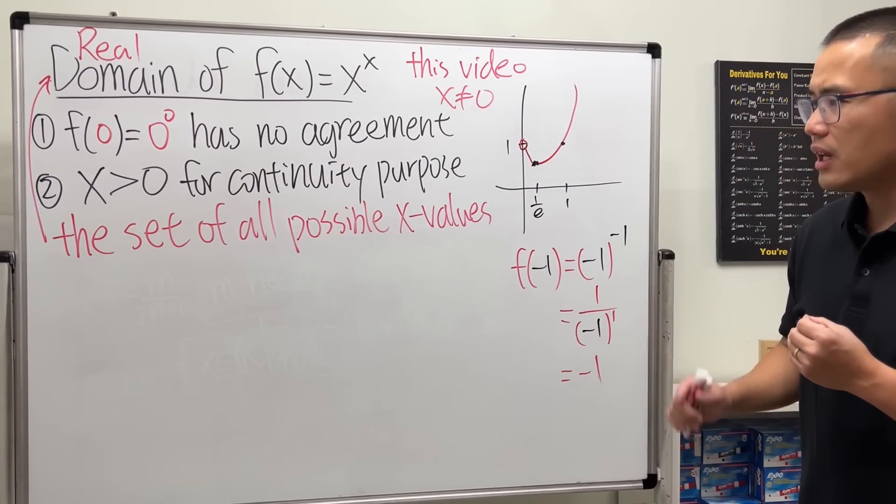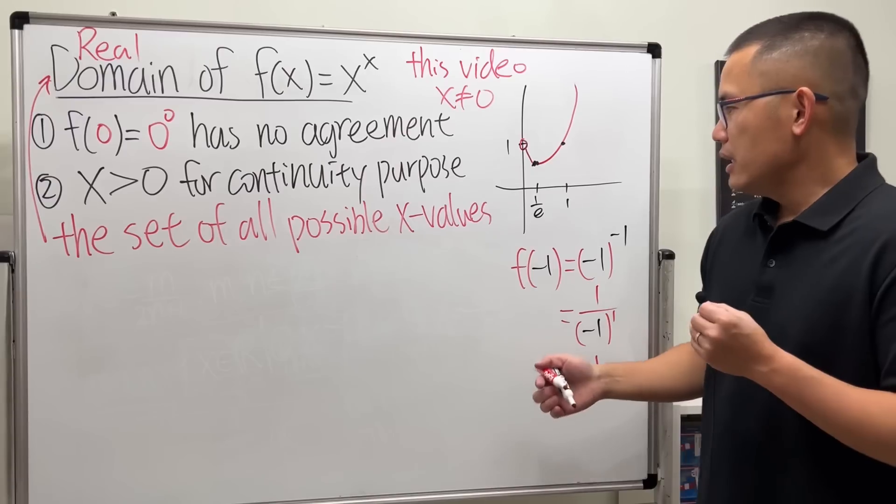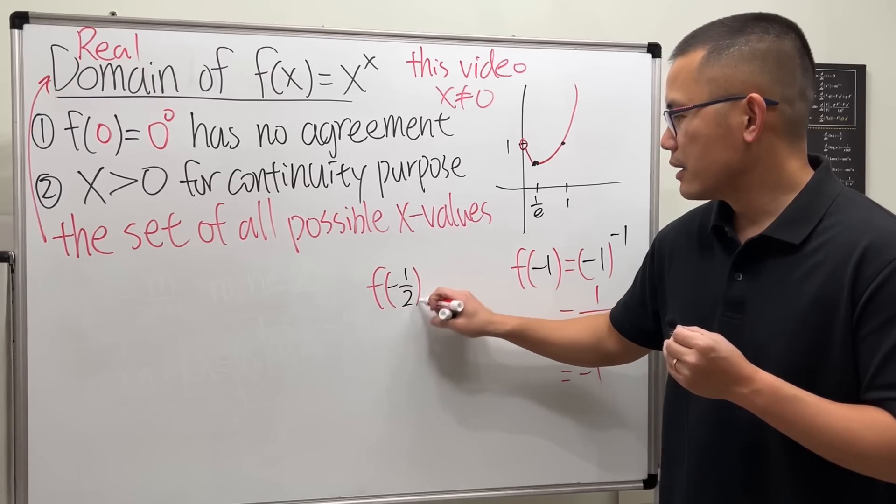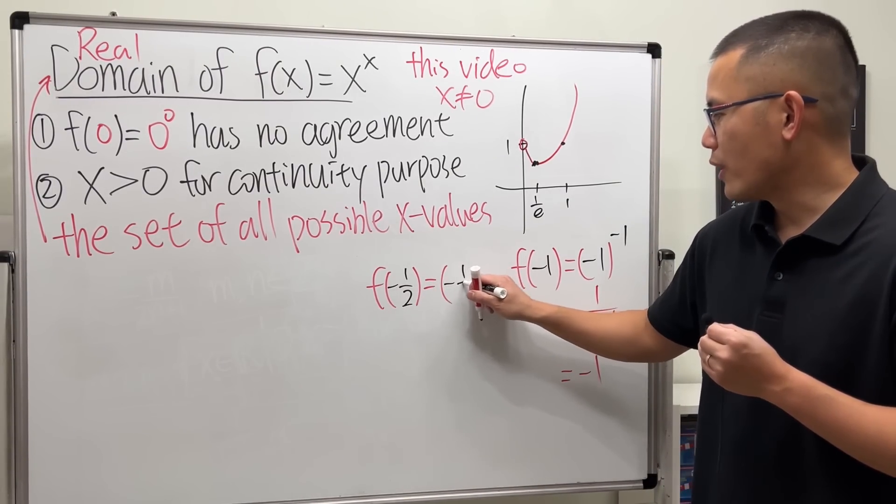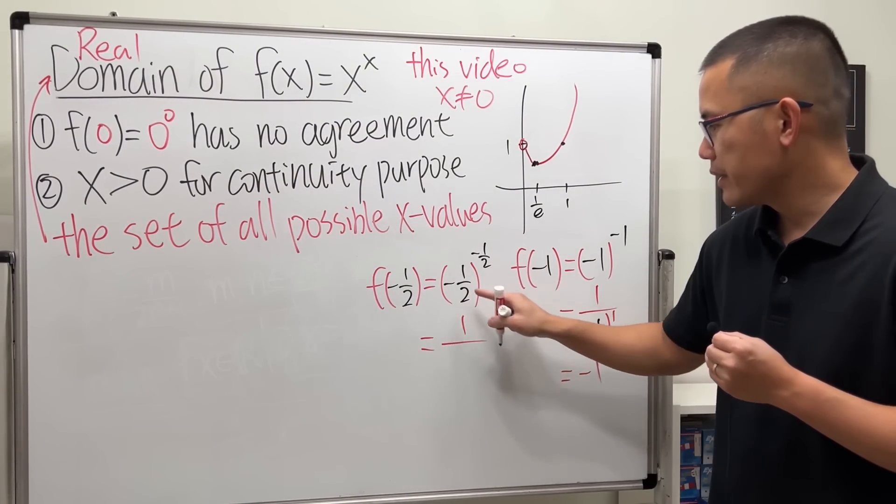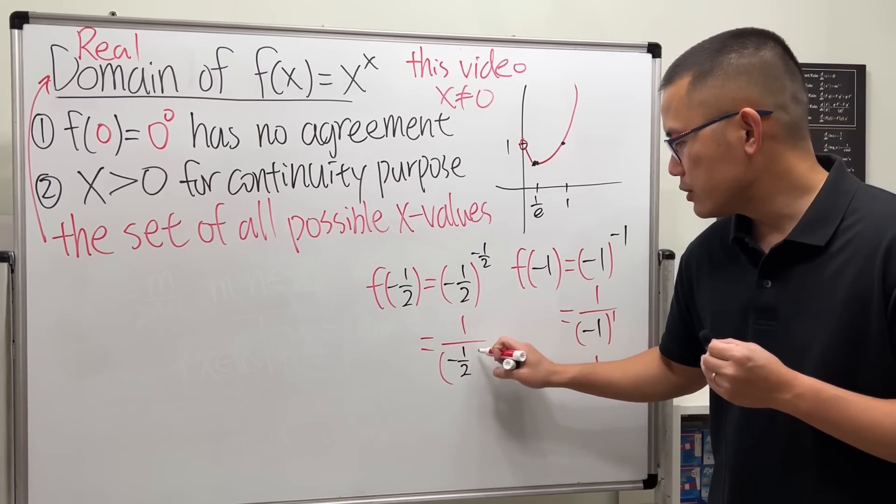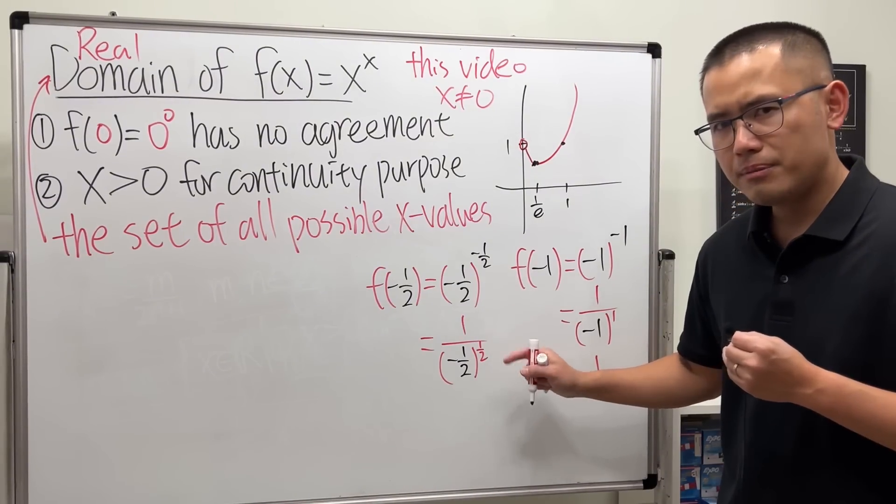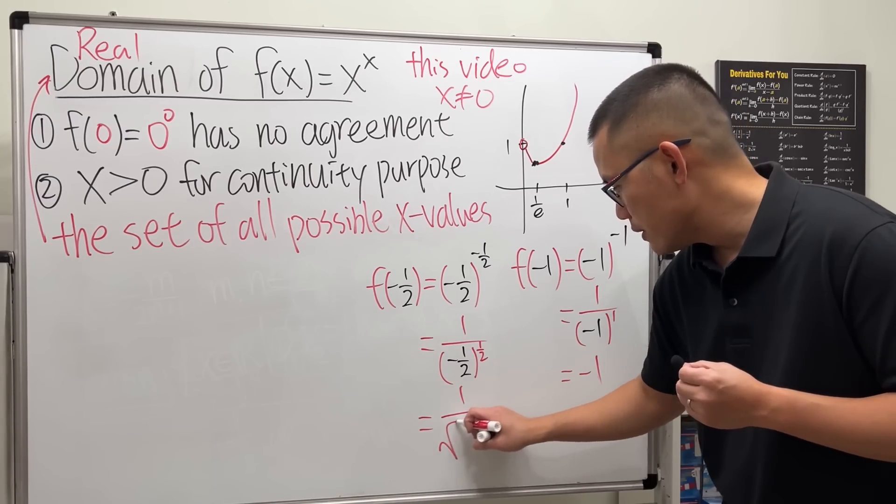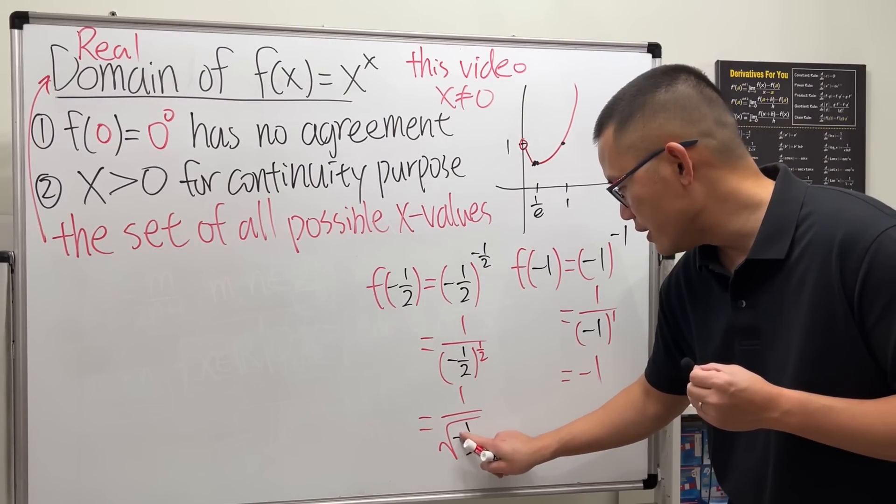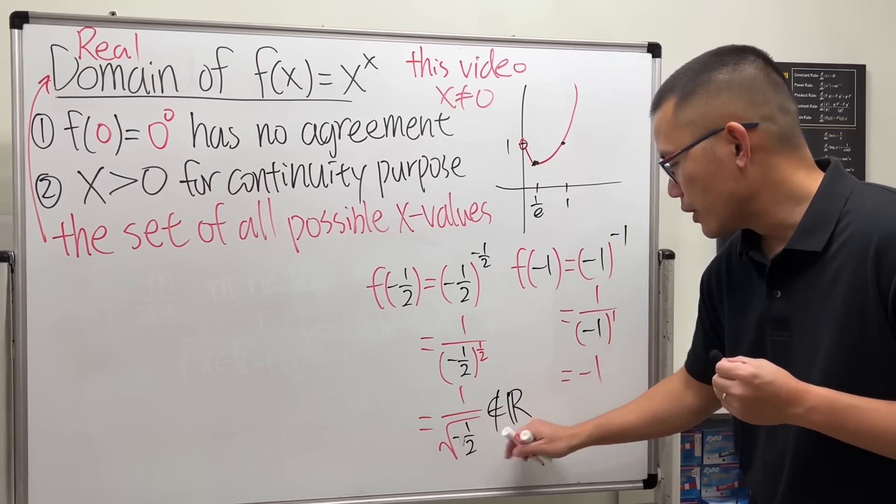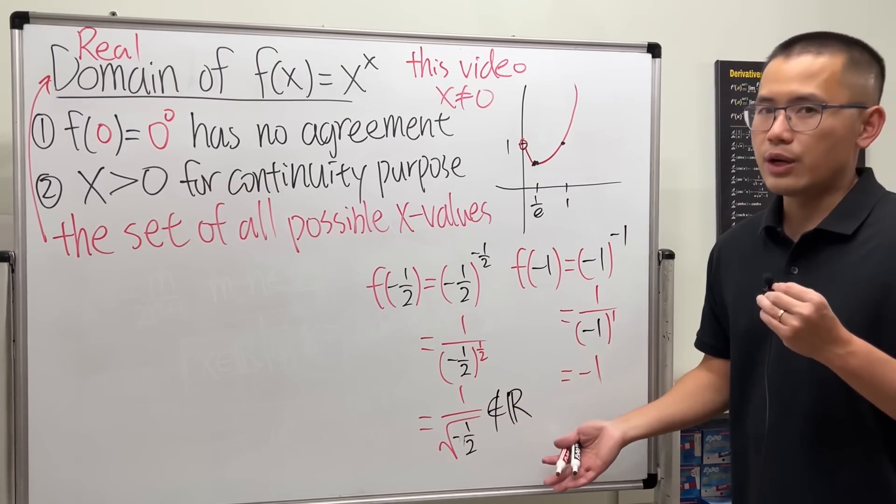But we have to be careful sometimes. If we have f(-1/2), this gives us (-1/2)^(-1/2), which is one over (-1/2) raised to the positive 1/2 power. But the 1/2 power is a square root, and the square root of a negative number is unfortunately no longer real.